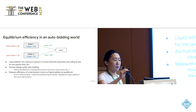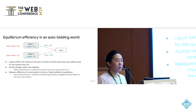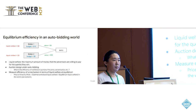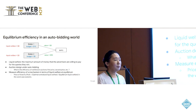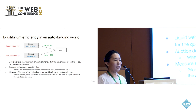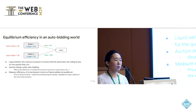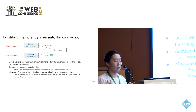We want to study equilibrium efficiency in this auto-bidding world. For the welfare definition we adopt the liquid welfare, which is the maximum amount of money a bidder is willing to pay for a query. For example, suppose there are two bidders and a single query: bidder one has a budget of ten and value of eight, so their liquid welfare is the smaller of the two — they're not willing to pay more than their budget or more than their value. For bidder two, who has a higher value but a lower budget of five, their liquid welfare is five even though their value is much higher.